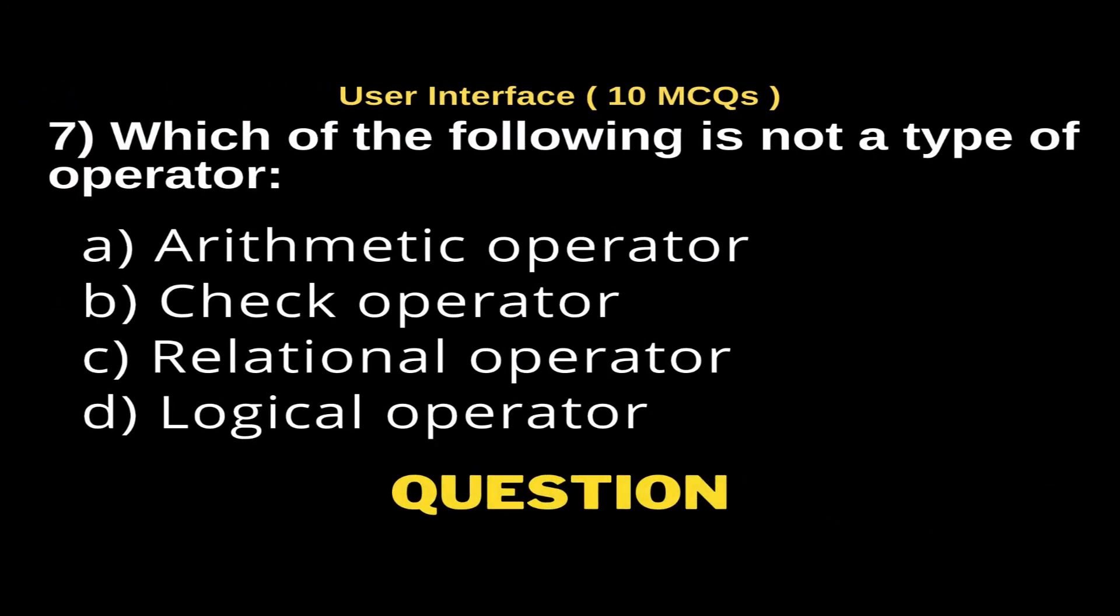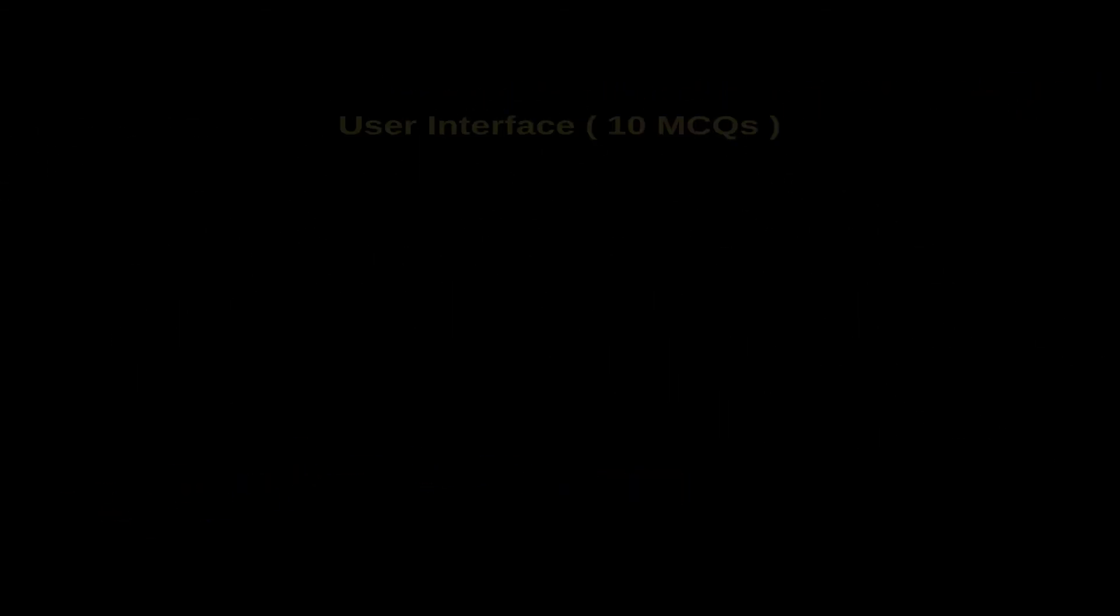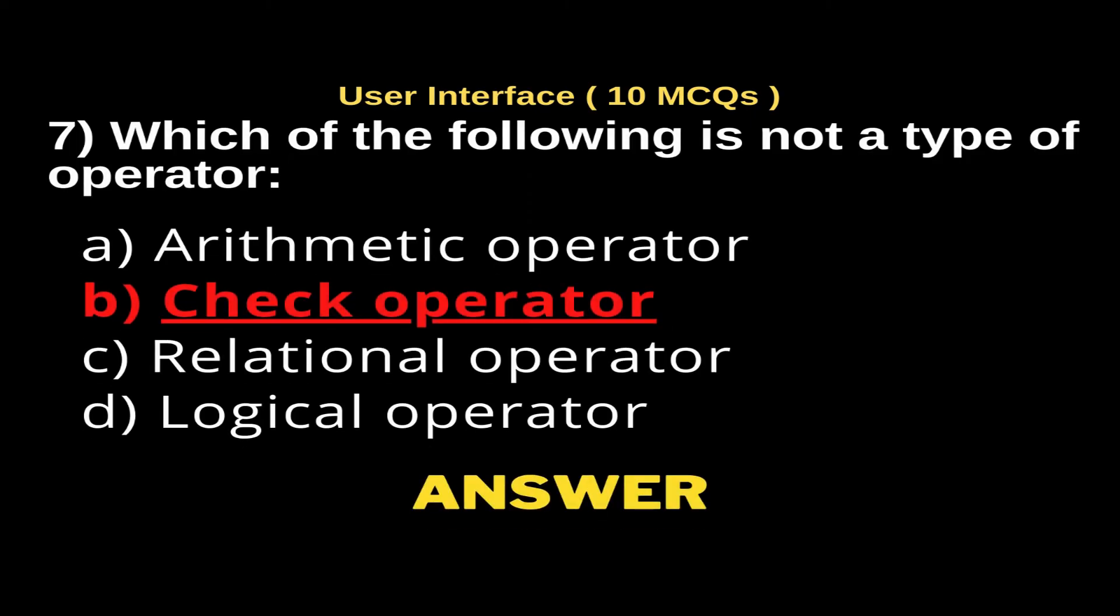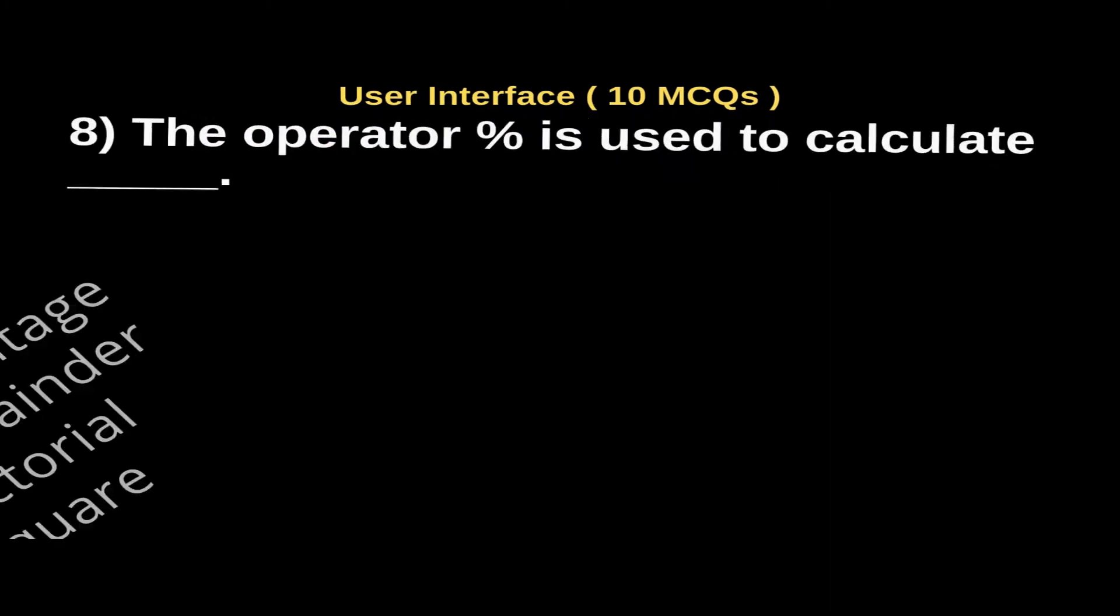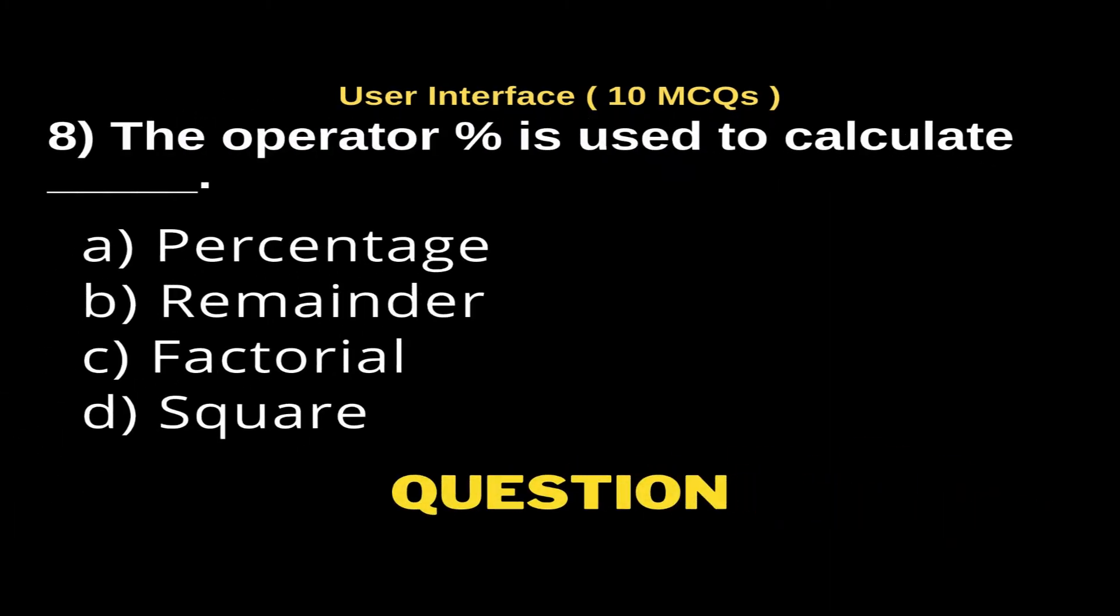Question 7: Which of the following is not a type of operator? Options: a) arithmetic operator, b) check operator, c) relational operator, d) logical operator. The right answer is option b, check operator.